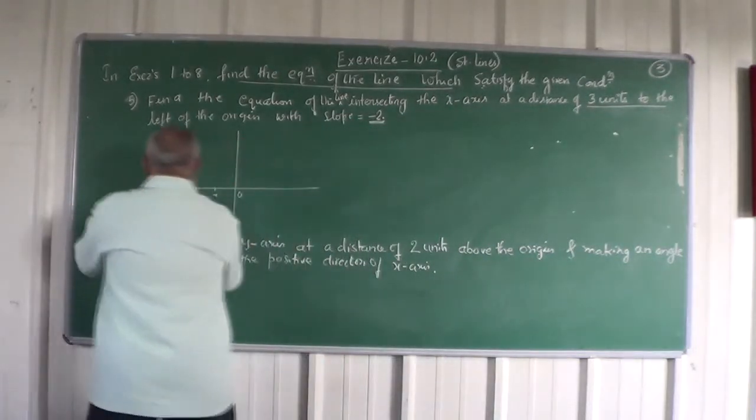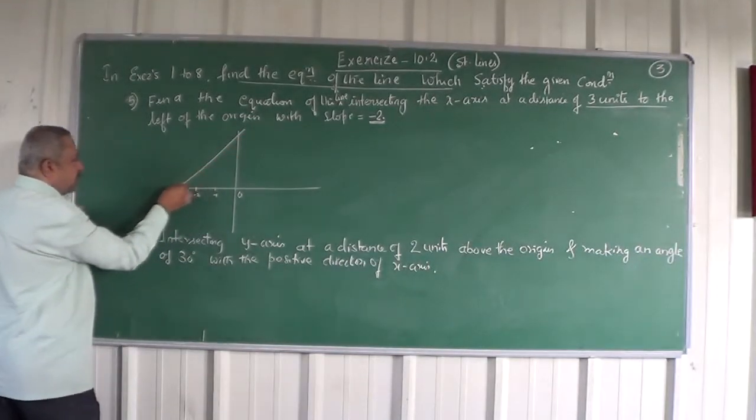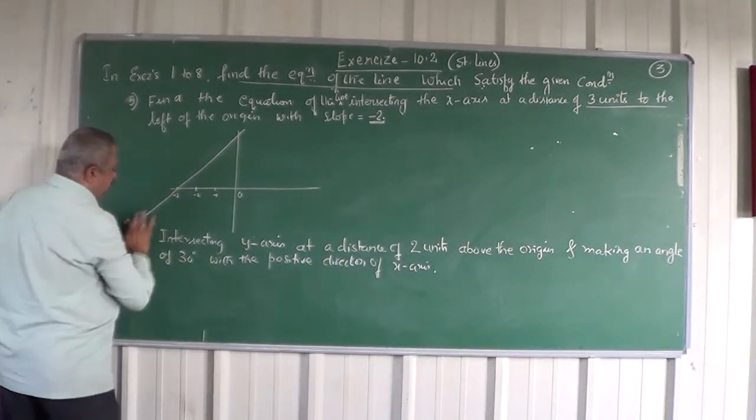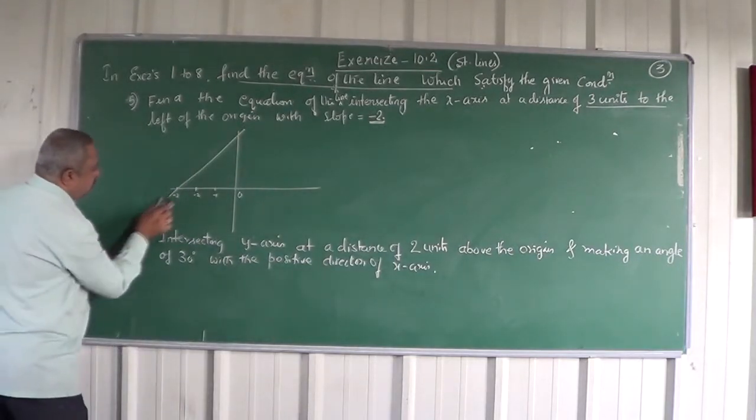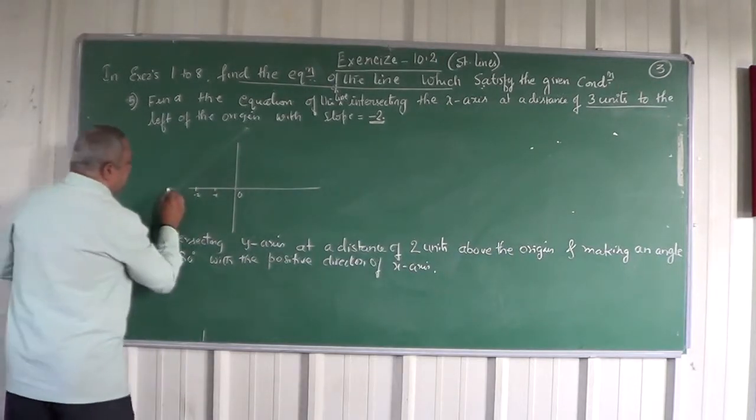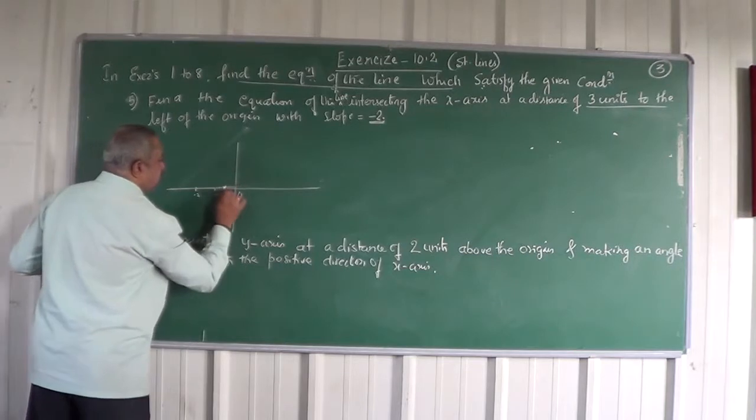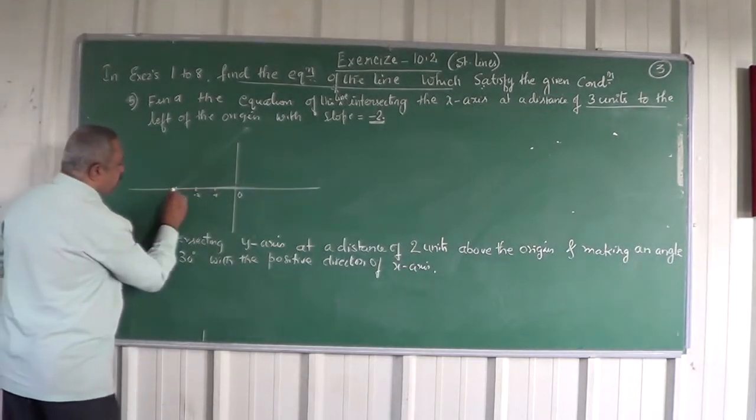And the line goes like this. Now, I am to write the line in this way or in this way. The required line is, tan theta is positive or negative? Negative. That means it is obtuse. So how is the line?